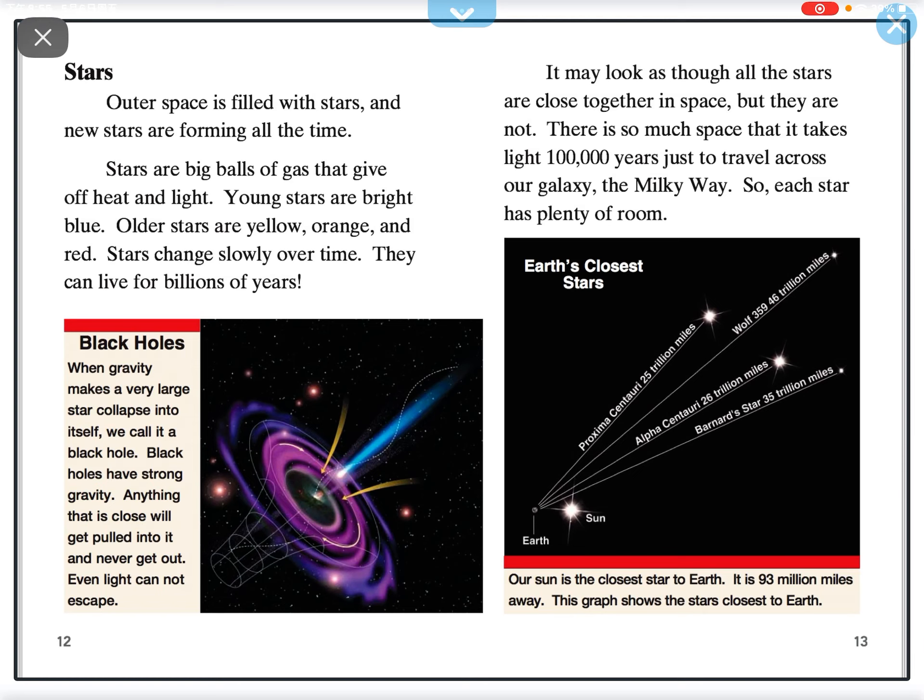Outer space is filled with stars and new stars are forming all the time. Stars are big balls of gas that give us heat and light. Young stars are bright blue. Older stars are yellow, orange and red. Stars change slowly over time. They can live for billions of years.